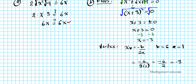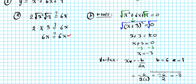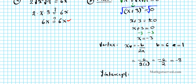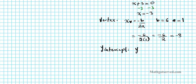Lastly, we need to find the y-intercept. The y-intercept is simply the value of c in the standard form of the equation of the polynomial. Here c is 9, so the y-intercept is equal to 9. Now we have all the information we need to generate the graph of our polynomial function, which is a perfect square trinomial.